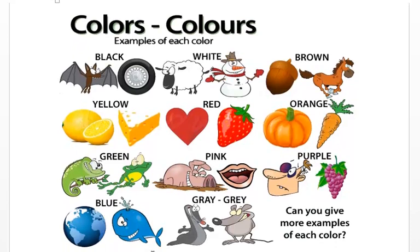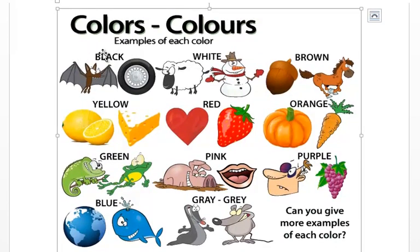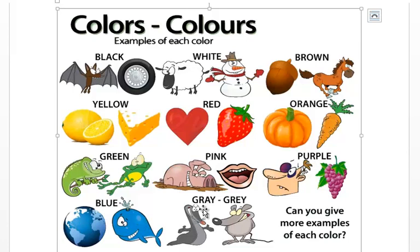Here we have some visual examples of colours: black like a bat or a tire; white like a sheep or a snowman; brown like an acorn or a horse; yellow like cheese or lemon; red like a heart or strawberry; orange like a pumpkin or carrot; purple like grapes or a bruise; pink like lips or a pig; green like a frog or lizard; blue like the ocean or a whale; gray like a seal or a mouse.